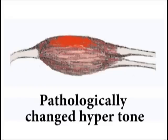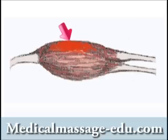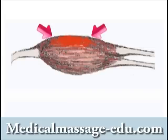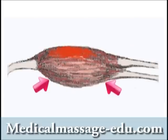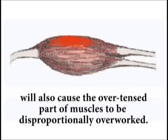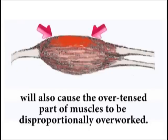In picture number three we can see a difficult muscular pathology. As we know, muscle mass is composed of muscular fibers. In this case, partial fibers of the same muscle accumulate much more tension than other parts of the same muscle, which makes this part of the muscle shorter than the rest of the fibers of the same muscle. Any attempt that causes the muscle to participate in movement or stabilization will also cause the over-tensed part of the muscle to be disproportionately overworked.